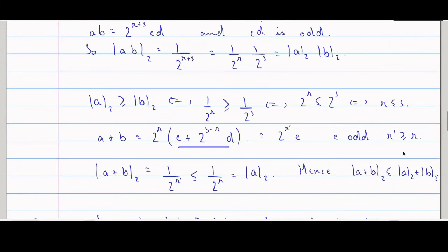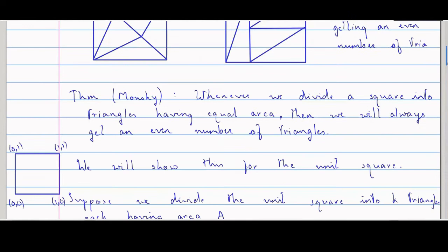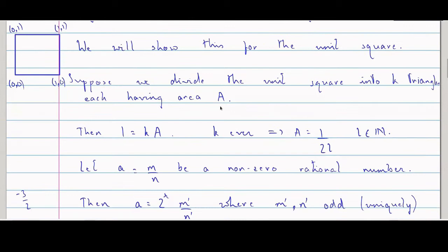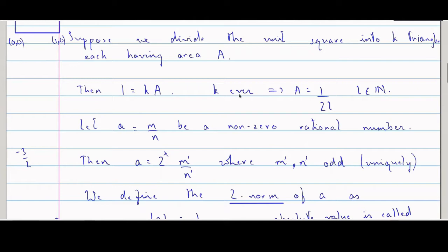Our aim is to prove this theorem: whenever we divide a square into triangles having equal area, we always get an even number of triangles. We are proving it for the unit square. If I have k triangles then 1 equals k times a. A number is even if and only if the 2-norm is less than 1. So the 2-norm of a — I want to show — is strictly bigger than 1.